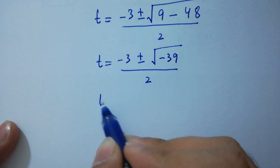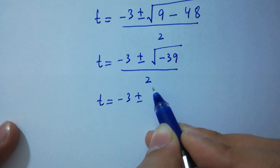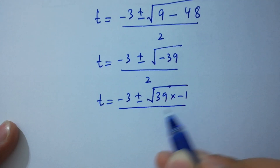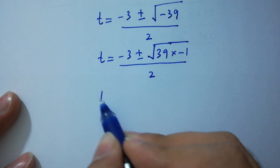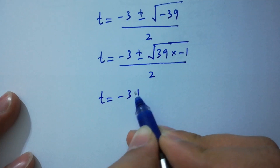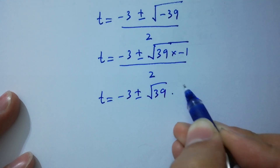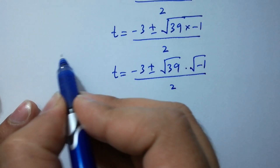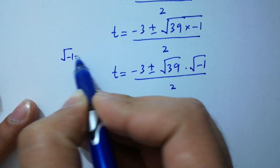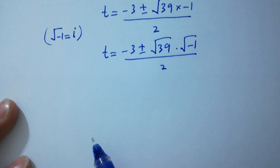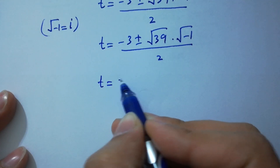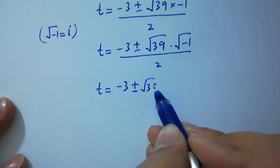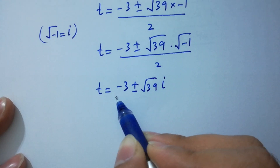t equals minus 3 plus or minus square root of 39 times minus 1, over 2. This becomes t equals minus 3 plus or minus square root of 39 times square root of minus 1, over 2. Since square root of minus 1 equals i from complex numbers, t equals minus 3 plus or minus square root of 39 times i, over 2.